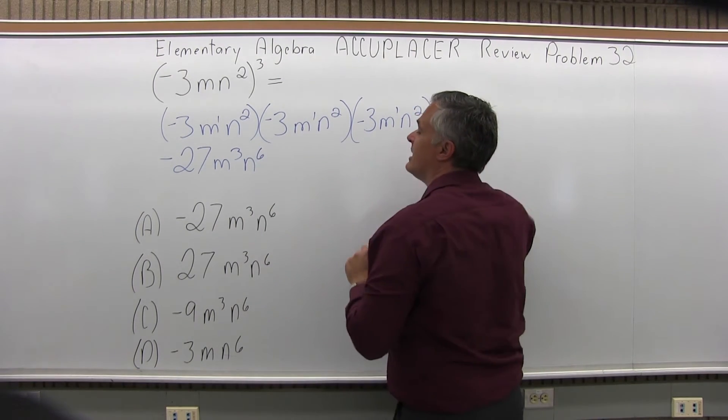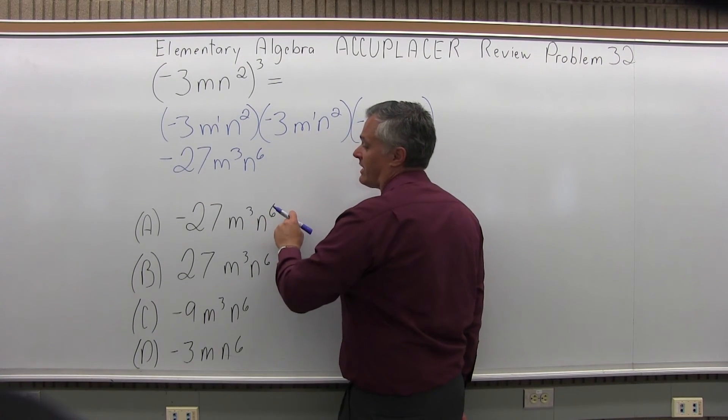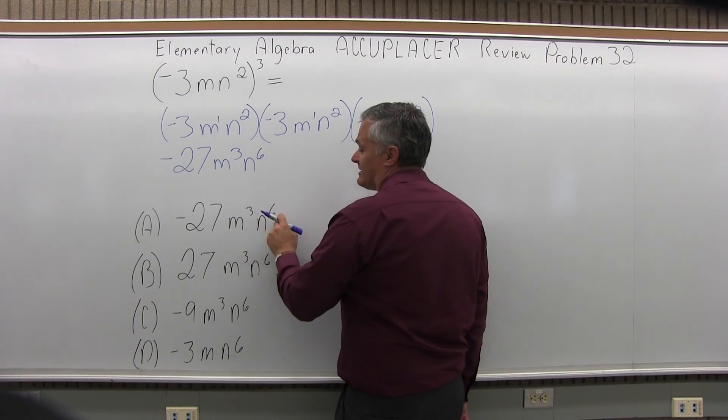The exponent on the n is 6. And as I had hoped, my answer matches up perfectly with option a, negative 27, m to the third, n to the sixth.